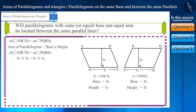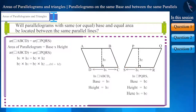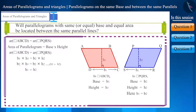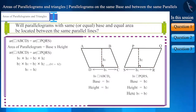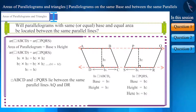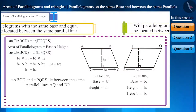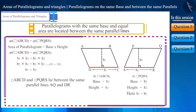Therefore, we can write their areas as B1×H1 and B2×H2. Since the bases of these two quadrilaterals are equal, by writing B1 equal to B2, we get H1 equal to H2. We can see that the two parallelograms whose bases and areas are equal are also of equal height, meaning H1 equals H2. This means they are located between the same parallel lines. Therefore, we can say that parallelograms with the same base or equal bases and equal areas lie between the same parallel lines.